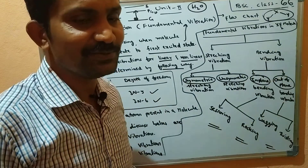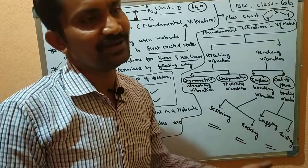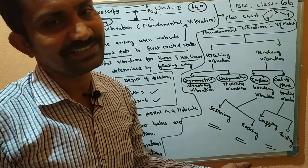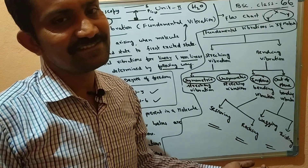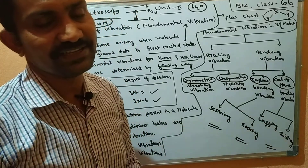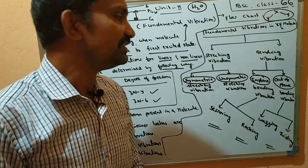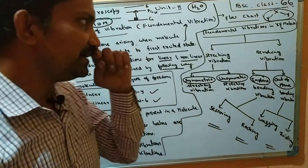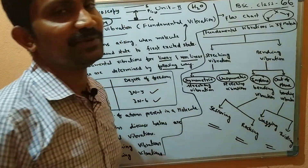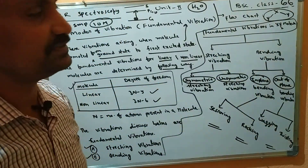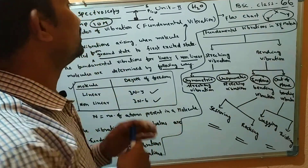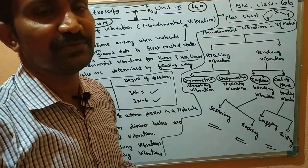In-plane bending has two types: scissoring and rocking. Out-of-plane bending has two types: wagging and twisting. I will discuss the details of each vibration type in the next class. This flow chart constitutes the complete long answer question for this topic.